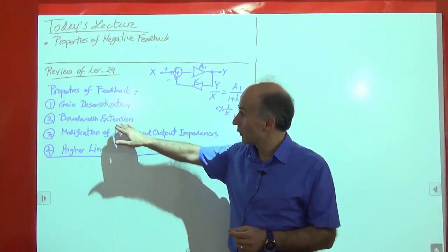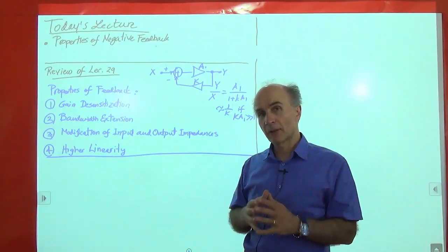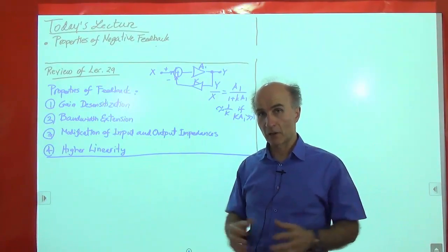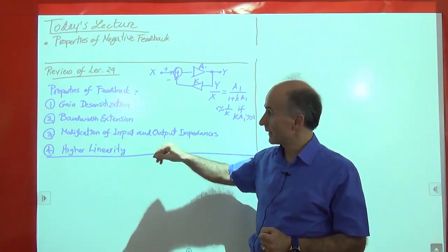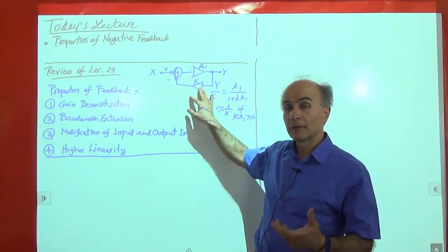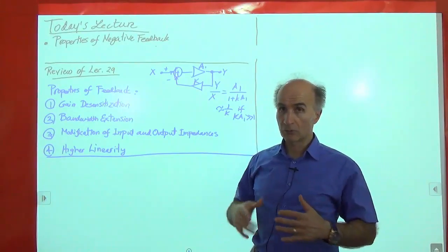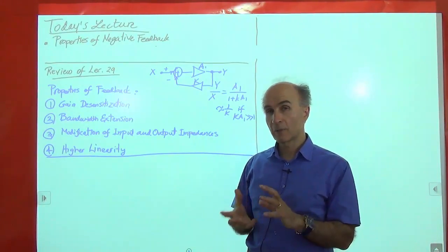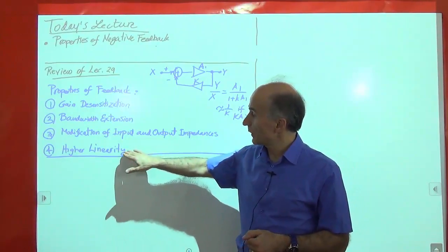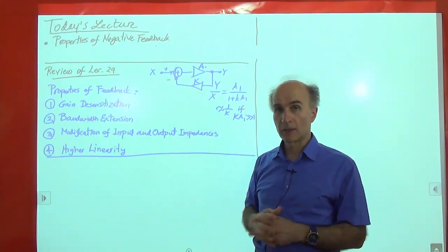We also saw the notion of bandwidth extension. When we apply feedback around an amplifier, the overall bandwidth of the amplifier increases, so we sacrifice some gain and in return we have a larger bandwidth. The third property is that the input and output impedances of this overall feedback circuit are not the same as those of the original amplifier. And finally, we also have higher linearity in this overall circuit than in the original amplifier.